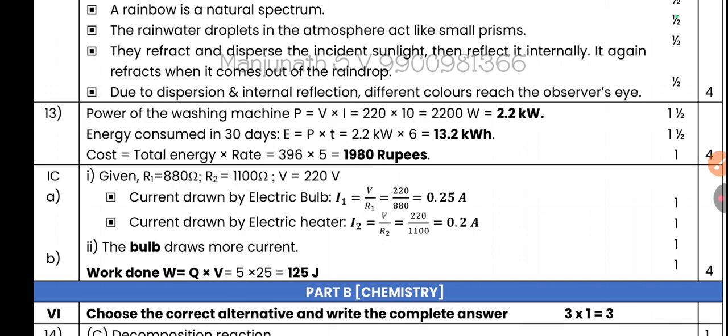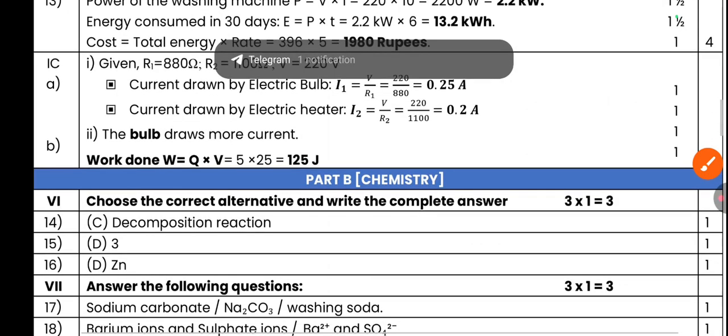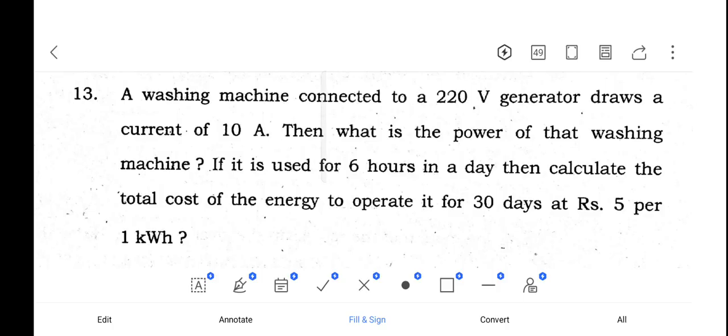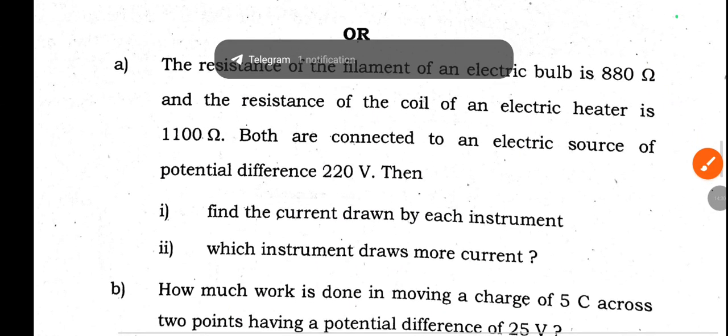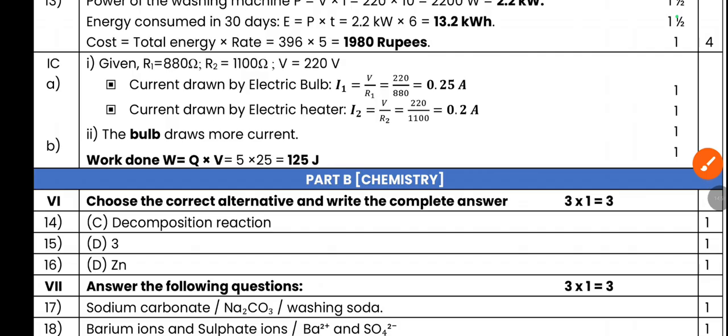Alternative question: Resistance of filament of electric bulb is 880 ohm, resistance of coil of electric heater is 1100 ohm. Both connected to 220 volt. Find current drawn by each instrument. Which draws more current? Given R1 = 880 ohm, R2 = 1100 ohm, V = 220 volt. Current drawn by electric bulb: I1 = V/R1 = 220/880 = 0.25 ampere. Current drawn by electric heater: I2 = V/R2 = 220/1100 = 0.2 ampere. The bulb draws more current.